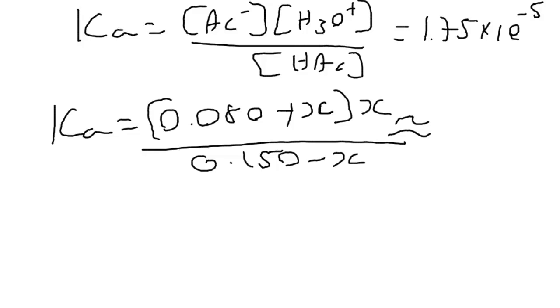Now if we make our approximation, and say that, you know, if x is going to be very small, and we know it is, because the Ka value is very small, then adding a small value to 0.08 really won't make much difference, or subtracting it from 0.15 won't make much difference.